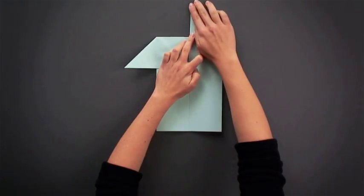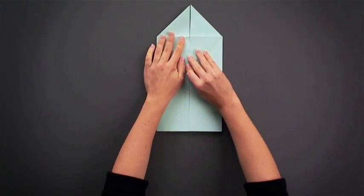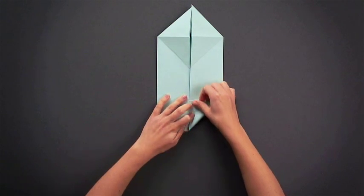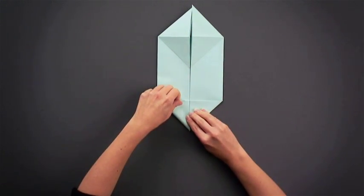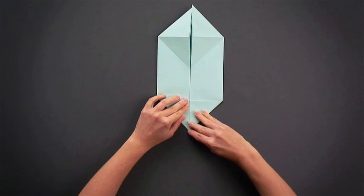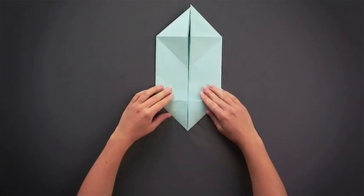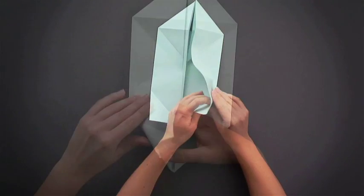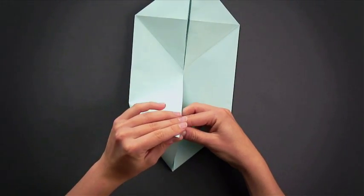Now fold the wings of the model in as shown and then make a pre-fold by folding the corners of the model in towards the centre. At this point you need to make a reverse fold as shown and repeat for the opposite side. This is quite tricky and may take some practice.